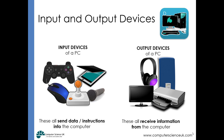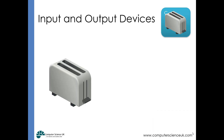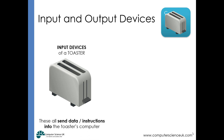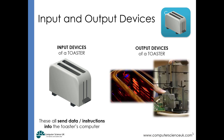Finally, let's look at the input and output devices of a toaster, which we touched on earlier. Input devices send data and instructions to the toaster's computer — these are the buttons being pressed and the dials being turned to send those instructions. The output devices would be the catch of the tray being released so that the toast pops up, and the heating element being turned on or off at various moments.